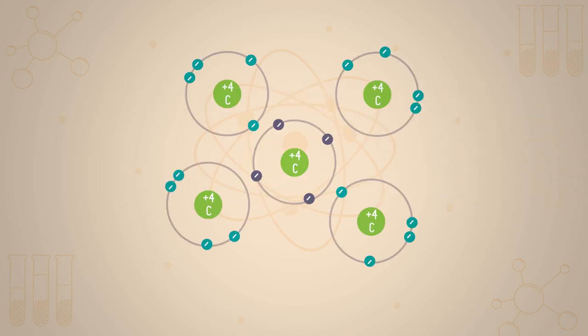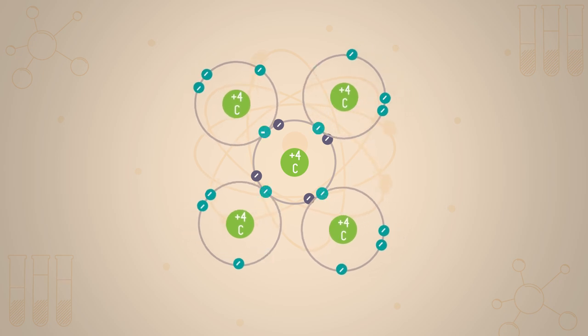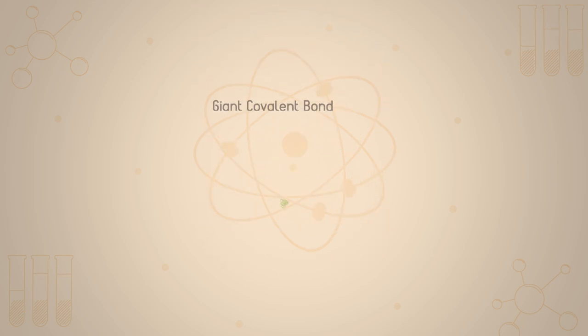With elements of group 4, carbon and silicon, there are four electrons in the outer shell and room for four more electrons, so four bonds will form.